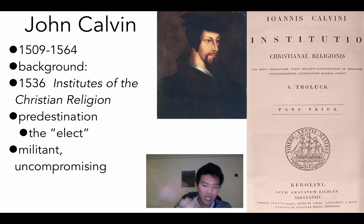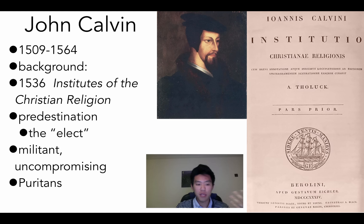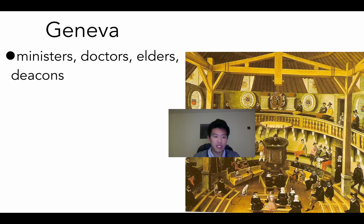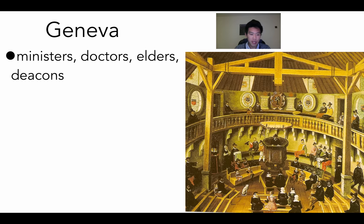The Puritans are going to be in England and eventually go to America for religious freedom. Calvin is eventually going to set up a model community in Geneva, Switzerland, where he's invited in to take over. Calvinism is going to be the most successful international form of Protestantism, spreading throughout different countries and even across oceans. On the right is a Calvinist church service — men and women are actually segregated, and it's very plain on the inside.